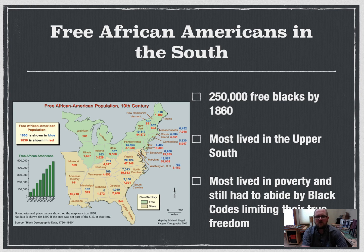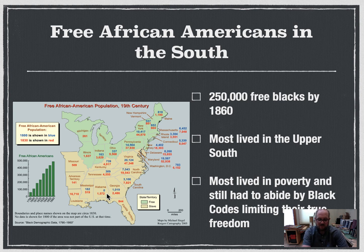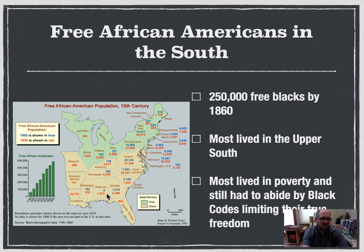Free African Americans also existed. Most lived in the upper South or in the North, with very few in the Deep South. Most lived in poverty. Some were occasionally taken back into slavery, sometimes able to buy their freedom, but in some cases slave catchers could claim them as runaways. They still had to abide by slave codes — limits on curfew, owning guns, and going to certain stores. So they had a lot of limits placed on their freedom.